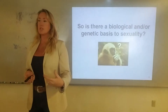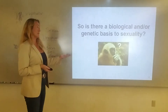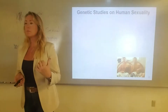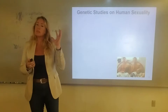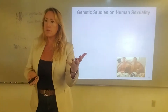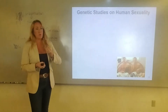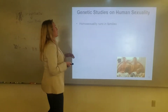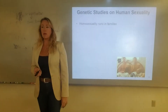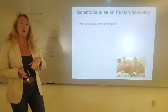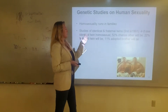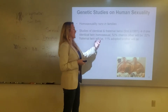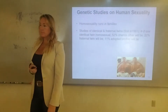I'm going to give you a series of experiments and studies that show there's a biological basis to sexuality. There are a lot of genetic studies on human sexuality. By the end of this, you'll be able to cite evidence for why sexuality has genetic or biological origins, at least partially. Homosexuality runs in families — there are families with higher rates of homosexuality, male and female. Studies of identical and fraternal twins were first done in 1991 and repeated in subsequent years. If one identical twin is homosexual, there's a 52% chance the other will be.